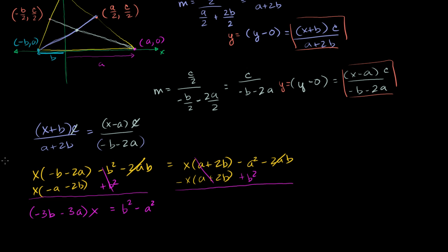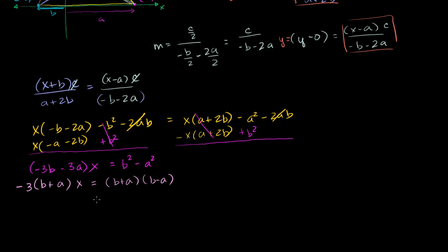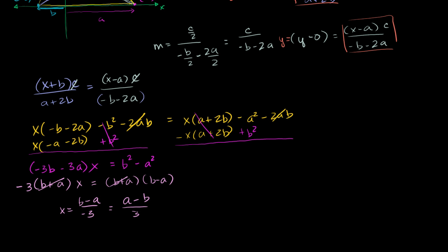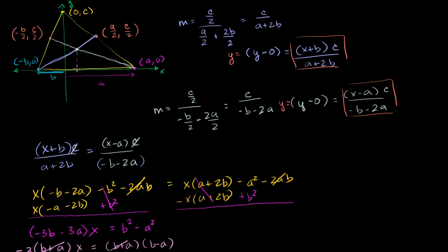We can factor the left side as -3(a + b) · x and the right side as (b + a)(b - a). Dividing both sides by (a + b), we get -3x = b - a, and dividing by -3 gives x = (a - b)/3. So the x-coordinate of our centroid is (a - b)/3. You can already see hints of the solution: a - b is the entire base distance, and this is one third of it.